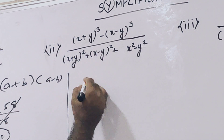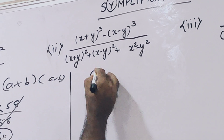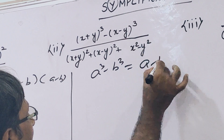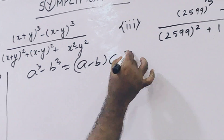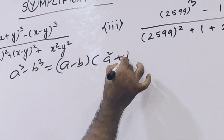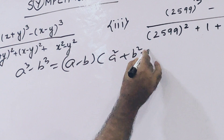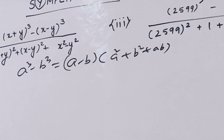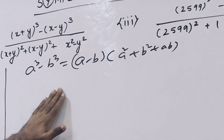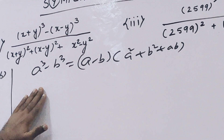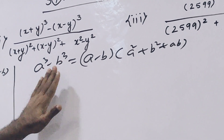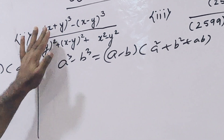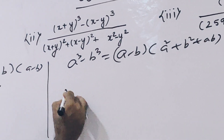You need to know the formula: a cubed minus b cubed equals (a-b) into (a squared plus b squared plus ab). This is the basic formula. When this type of question comes, again apply this technique. So a cubed minus b cubed, where a is (x+y) and b is (x-y).